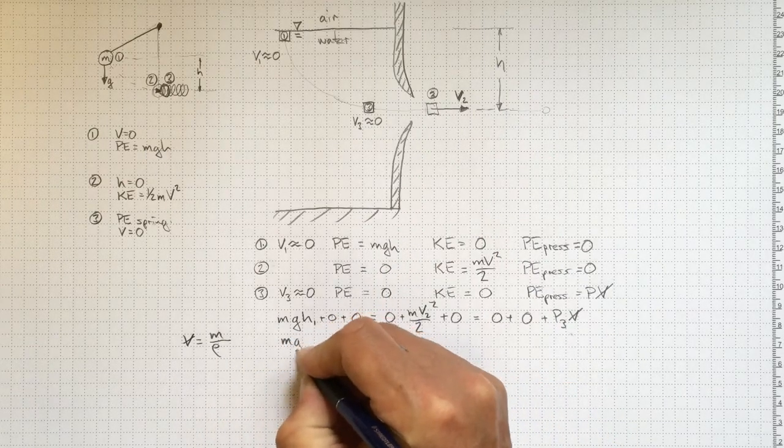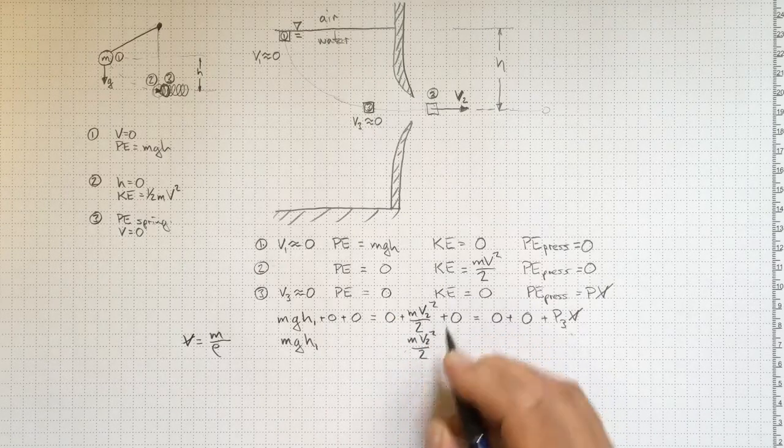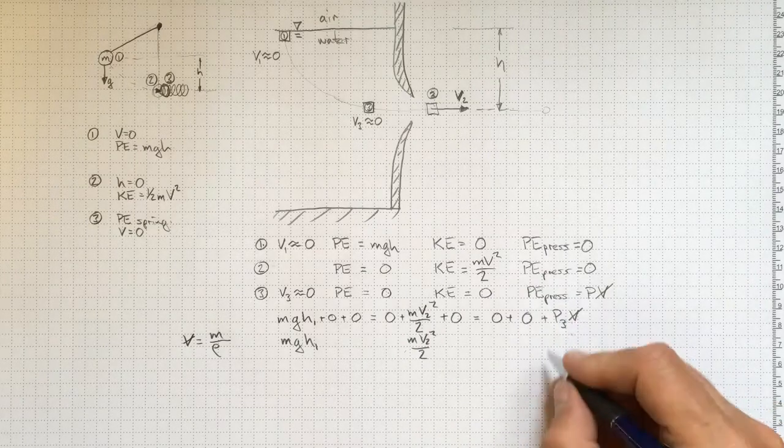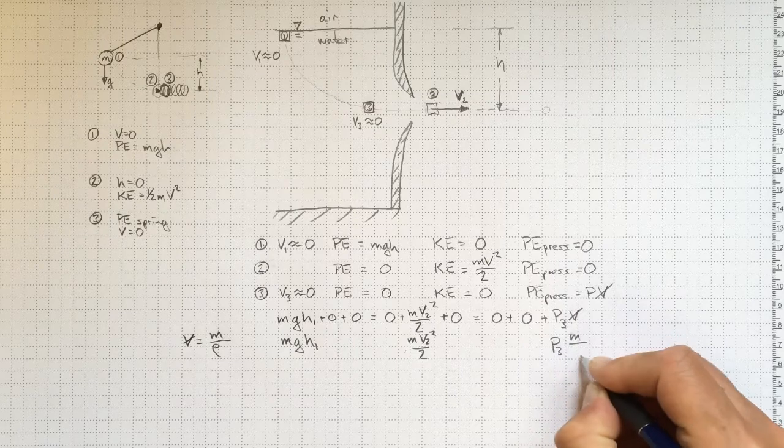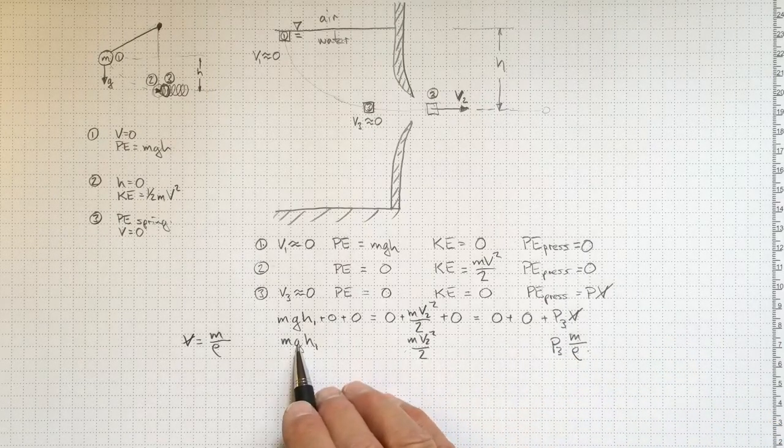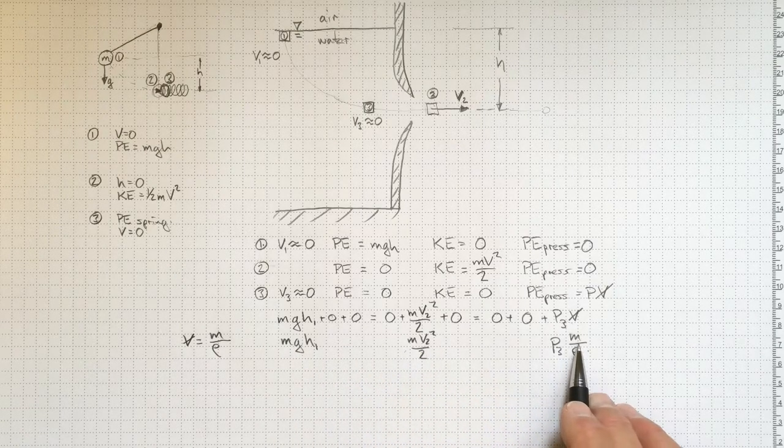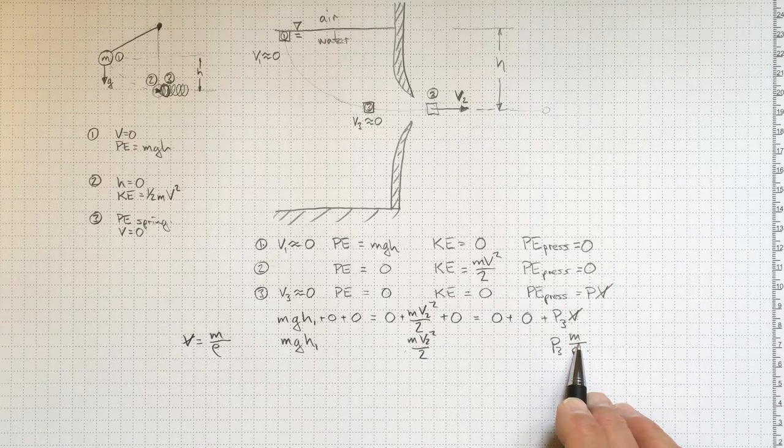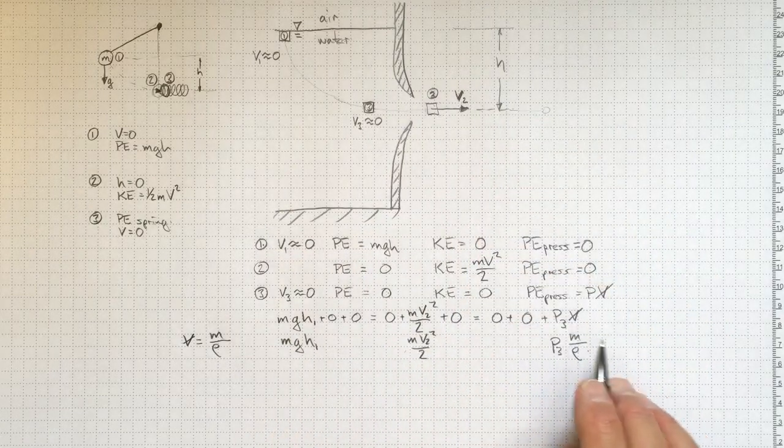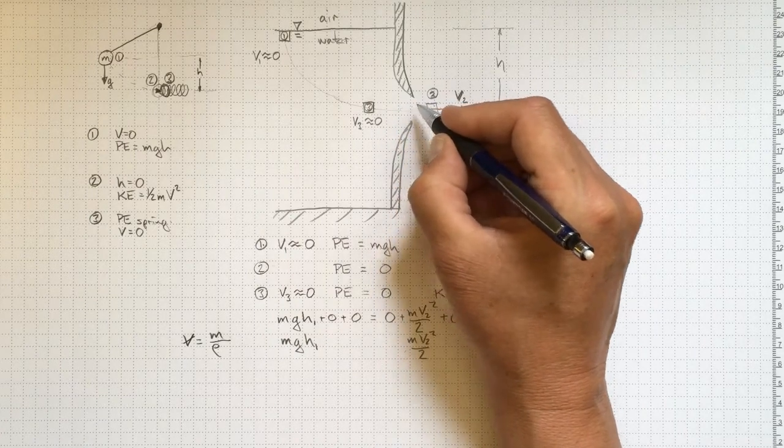So mgh1, that's that one. mv2 squared over two, that's the kinetic energy element. And p3 times v, that'll give me p3 times m over rho. So looking at each of these terms, expressing different things, potential energy of elevation, kinetic energy of motion, and potential energy of pressure, we could look at them at any position along the way. We'd have to take each of the three into account because there might be a little bit of each. Here it might still be at a higher pressure but moving fairly quickly, for example.